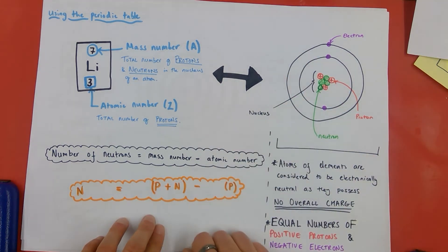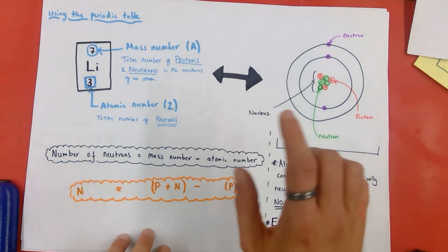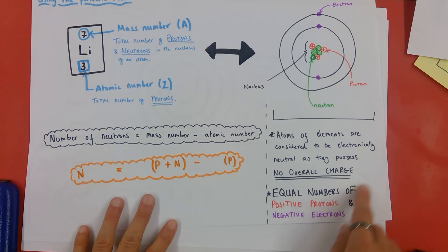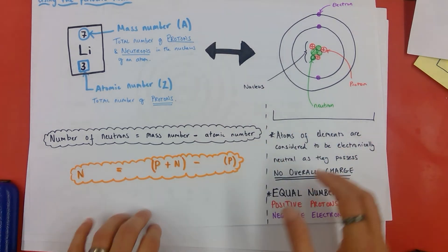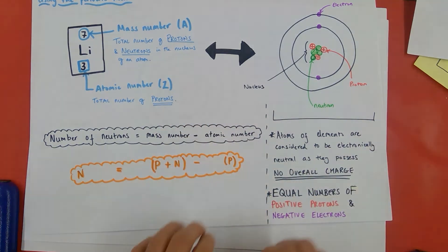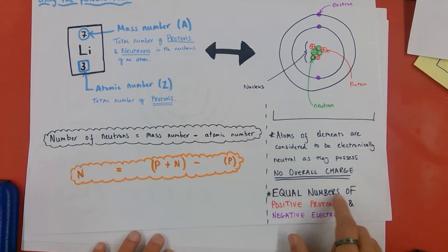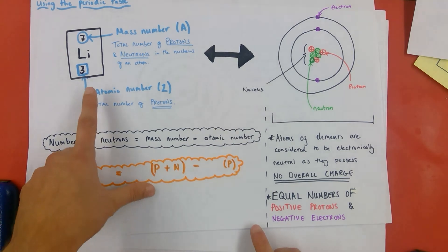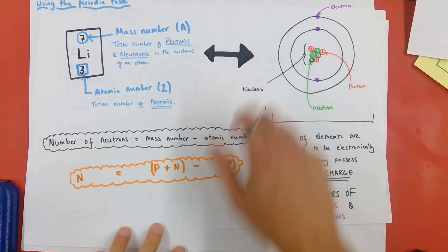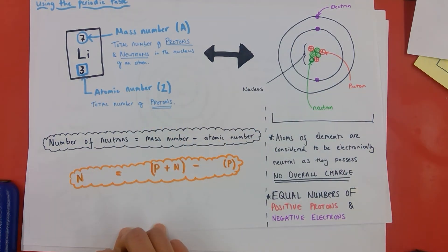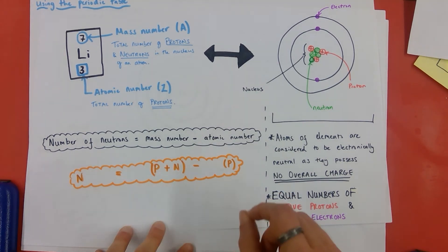How did I know there were three electrons in the outer, in the shells, in the inner and outer shell? Well, how did I know there were three? That is going to come in with this idea here. Atoms of elements are considered to be electronically neutral as they possess no overall charge, which means this particle, as a sum, has no overall electrical charge. For that to be true, you must have equal numbers of positive protons in the nucleus and negative electrons surrounding that nucleus in the shells. So if I have three protons, I must also have three electrons to balance out that positive charge with three negatives, hence why there are three electrons. So the atomic number not only tells me the number of protons directly, it also allows me to infer the number of electrons in an atom of any element, which is incredibly useful.